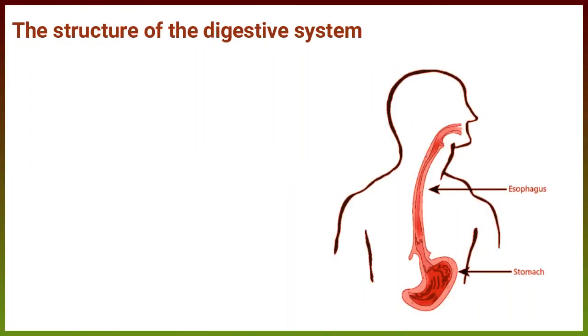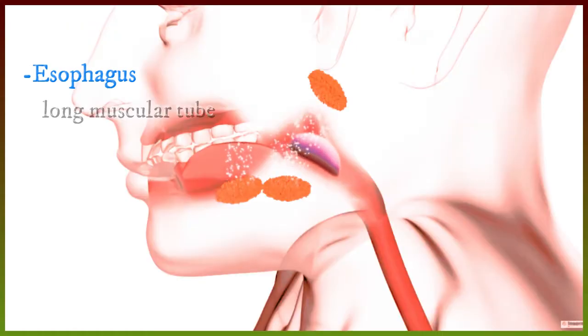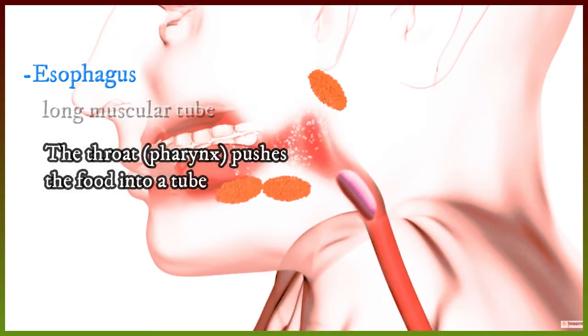Two — the esophagus, which is a long muscular tube that moves food down into the stomach. During swallowing, the throat (pharynx) pushes the food into the tube called the esophagus.